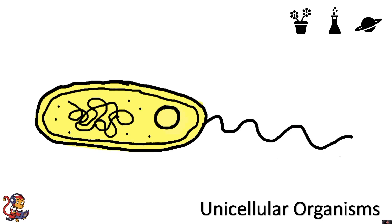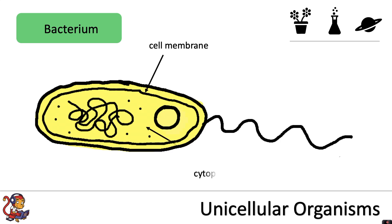The first unicellular organism we will look at is the bacterium. The plural of bacterium is bacteria. This cell has many similar features to those of the animal and plant cells we've looked at previously. You might be able to pick out a few of these, including the cell membrane, cytoplasm, ribosomes and the cell wall.